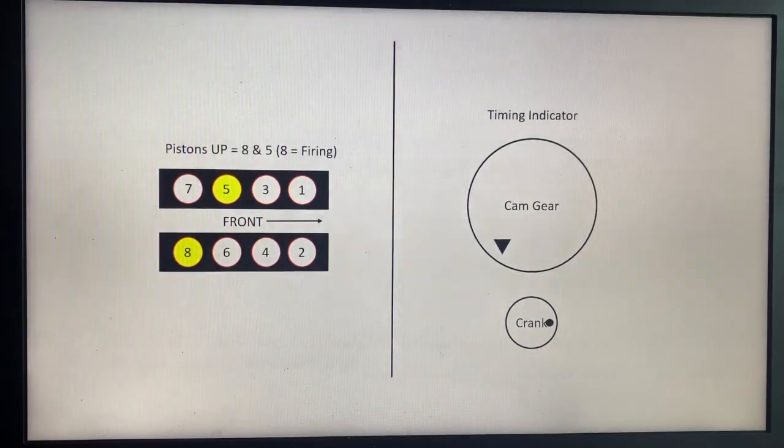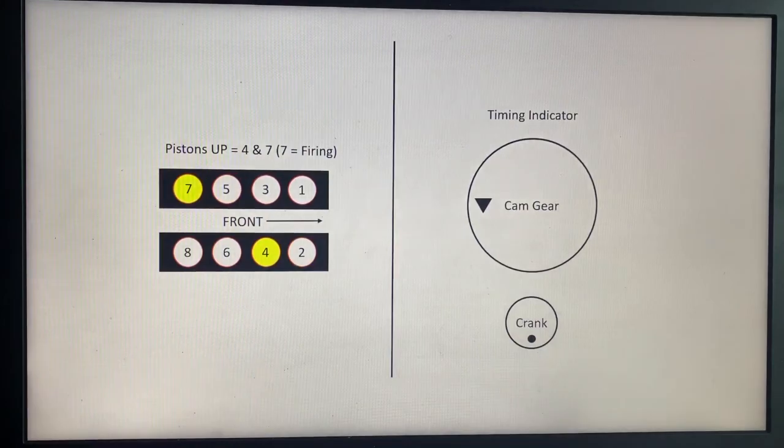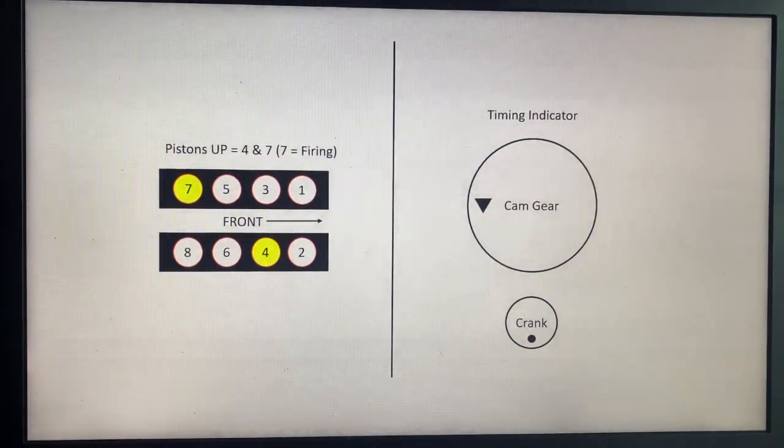If you rotate the crank gear another 90 degrees, putting the crank gear in the six o'clock position and the cam gear at the nine o'clock position, the pistons that will be up will be number four and number seven, with number seven being the firing piston.